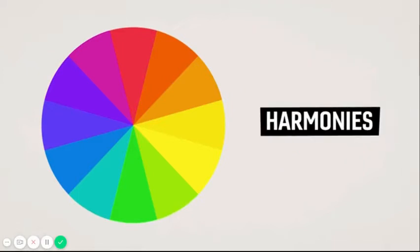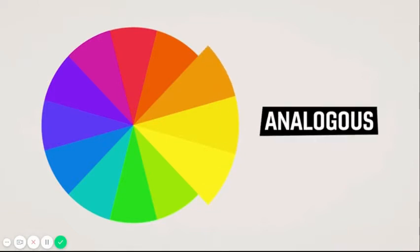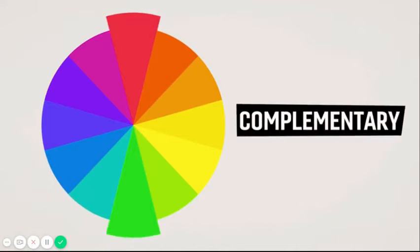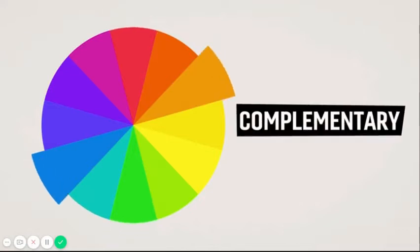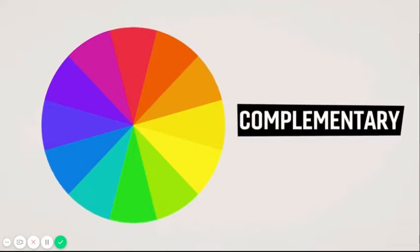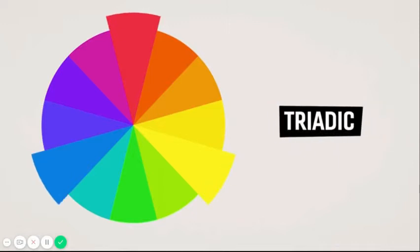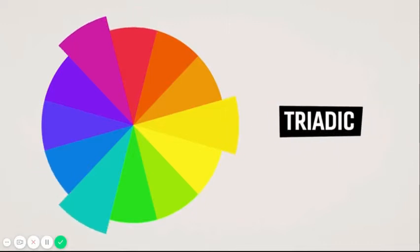Harmonies are color combinations that go well together. The big three are analogous colors, which are any three contiguous colors; complementary colors, which are two colors that are opposite each other; and triadic colors, which are any three colors that are evenly split into thirds.